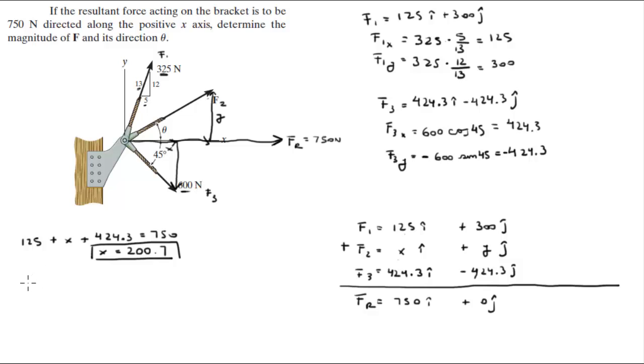And the second equation is 300 plus y minus 424.3 is equal to 0. So y is equal to 124.3. This tells us that F2, which is the one we're trying to find, is equal to 200.7i plus 124.3j. And this is the Cartesian vector form of this vector.